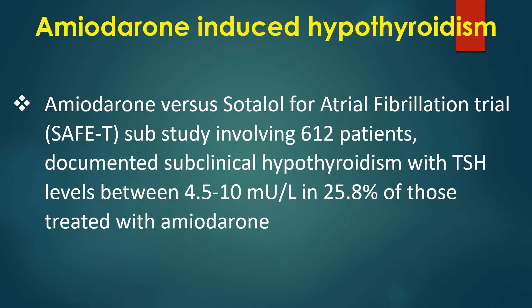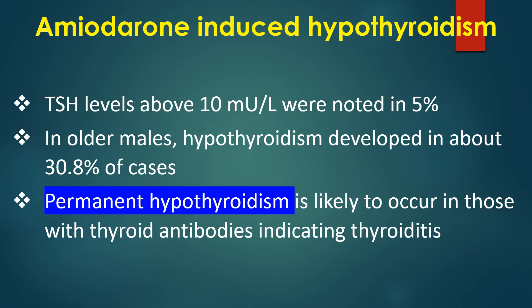The amiodarone versus sotalol for atrial fibrillation trial sub-study involving 612 patients documented subclinical hypothyroidism with TSH levels between 4.5 to 10 milli-international units per litre in 25.8% of those treated with amiodarone. TSH levels above 10 milli-international units were noted in 5%. In older males, hypothyroidism developed in about 30.8% of cases. Permanent hypothyroidism is likely in those with thyroid antibodies indicating thyroiditis.